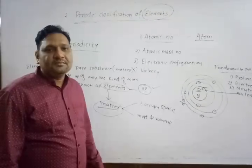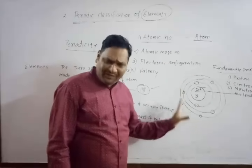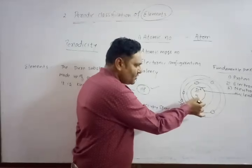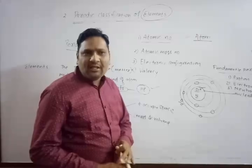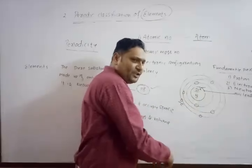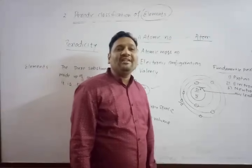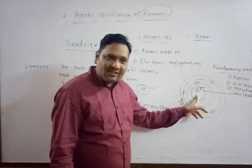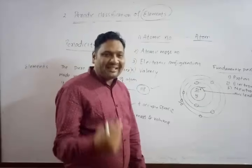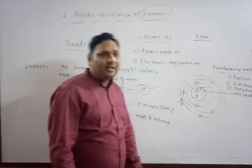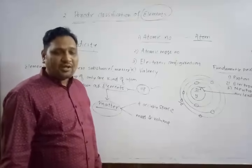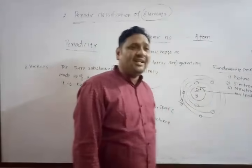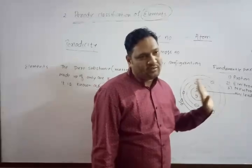So this is the structure of the atom. Atom consists of a centrally placed nucleus. Inside the nucleus there are protons and neutrons — together called nucleons. Proton has positive charge, neutron has no charge, and electron has negative charge. Electrons revolve around the nucleus in orbits. These are the three fundamental particles of atom: proton, neutron, and electron.